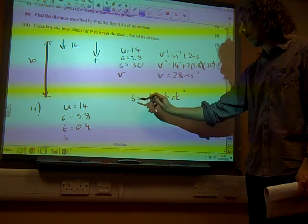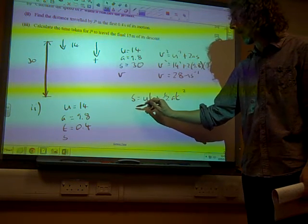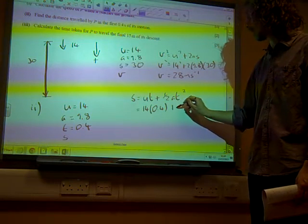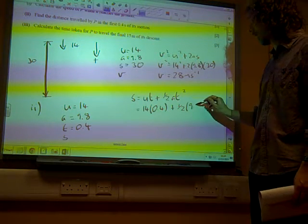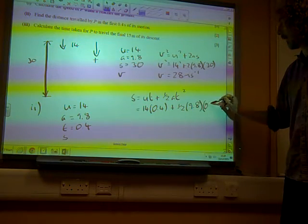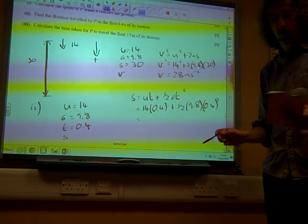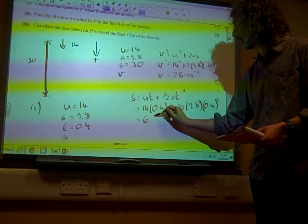Again, just using what we're given in the question for this. So S is 14 times 0.4 plus a half, 9.8 times 0.4 squared. And if you put that into the calculator, we get 6.384 metres.